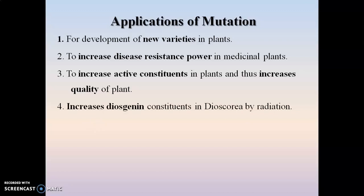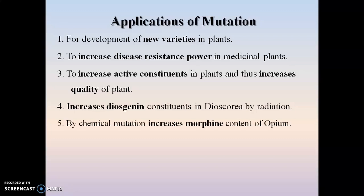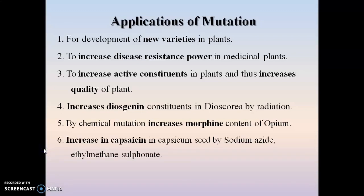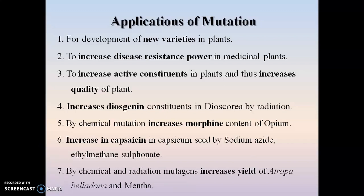Mutation is also used to increase specific chemical constituents. For example, radiation treatment is given to increase the diosgenin content of Dioscorea, while chemical mutation causes an increase in the morphine content of opium. Increase in capsaicin in capsicum seeds is achieved using mutagens like sodium azide and ethyl methane sulfonate. Chemical as well as radiation mutagens are also used to increase the yield of Atropa belladonna and Mentha.